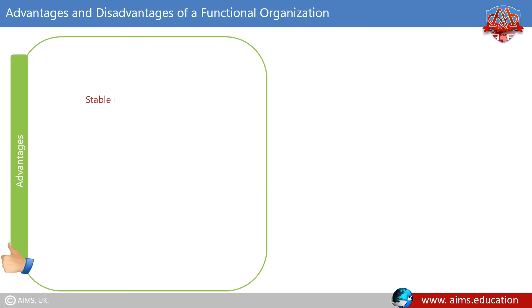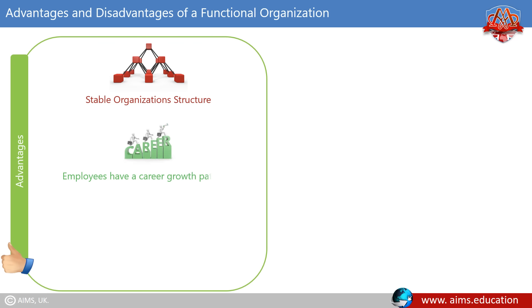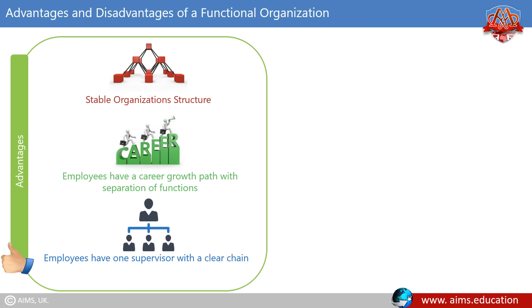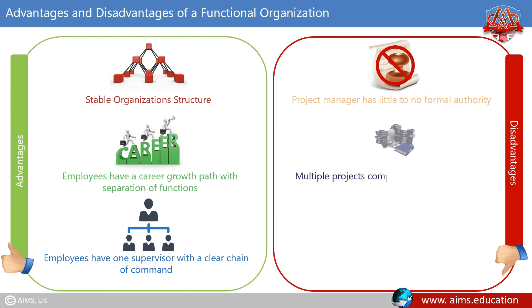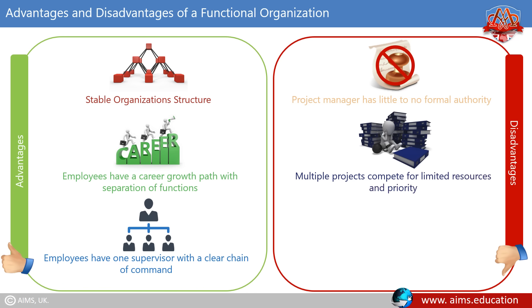The advantages of a functional organization are as follows: it is a stable organization structure; employees have a career growth path with separation of functions; and employees have one supervisor with a clear chain of command. Disadvantages include: the project manager has little to no formal authority; multiple projects compete for limited resources and priority; and project team members are likely to remain loyal to their functional manager.